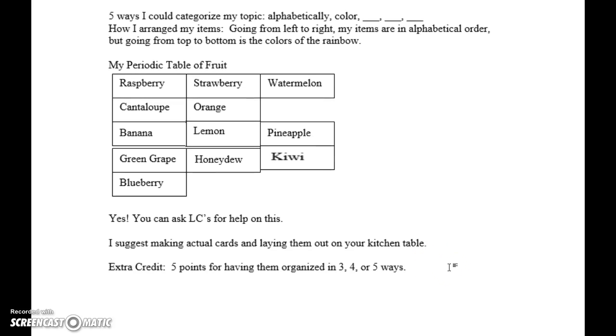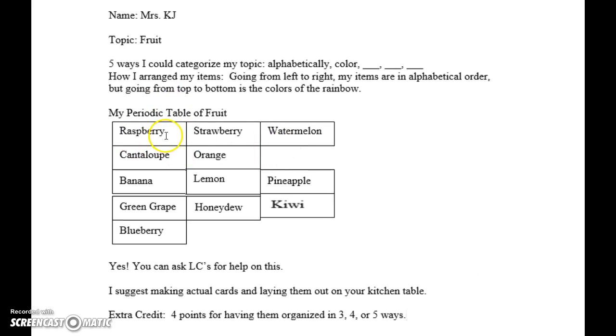So, extra credit. Five points for having them organized in three, four, or five ways. So you can get 15 bonus points. Wow, that's a lot. Maybe I should narrow that down. That's too many. 12 bonus points. You can get a total of 12 bonus points on this assignment. Okay? That's a lot in chemistry. How? So, how you can is you have to have it arranged in two ways. So I did colors of the rainbow and alphabetical. If you can also figure out a third way that this is organized, a fourth way, or a fifth way, you're going to get additional points.